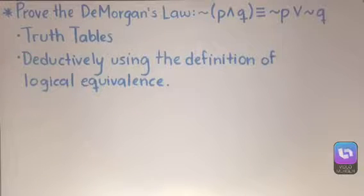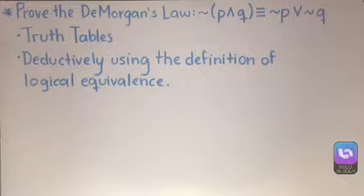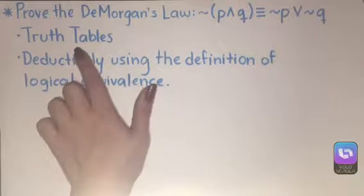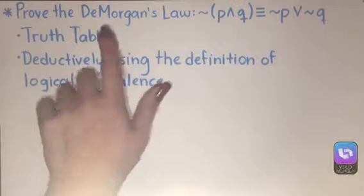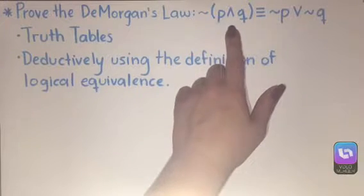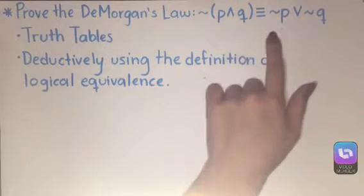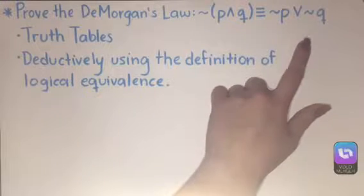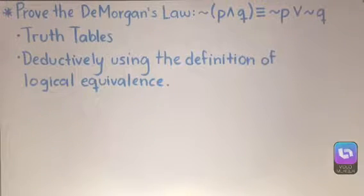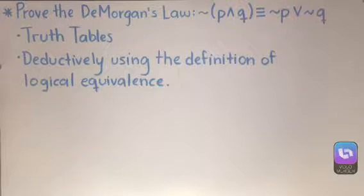Hello, my name is Yarinette Rivera and today I will be solving a problem for my discrete structures mathematics course. The problem I will be solving will have me prove one of De Morgan's laws — that the negation of (P and Q) is logically equivalent to the negation of P or the negation of Q. I'll be proving this using truth tables and by deductively using the definition of logical equivalence.